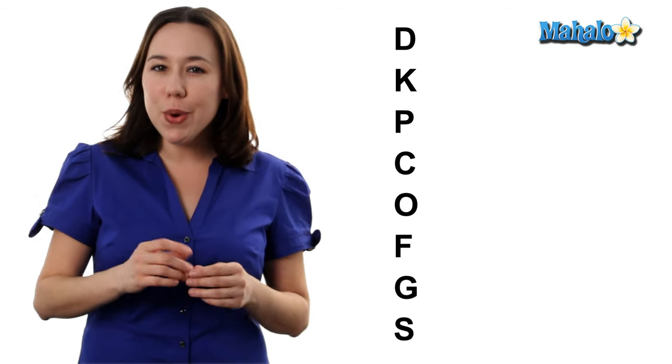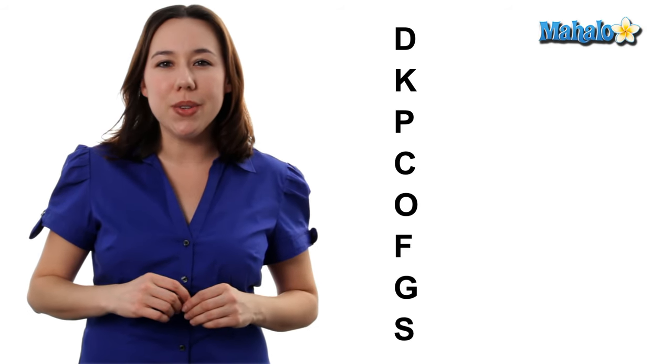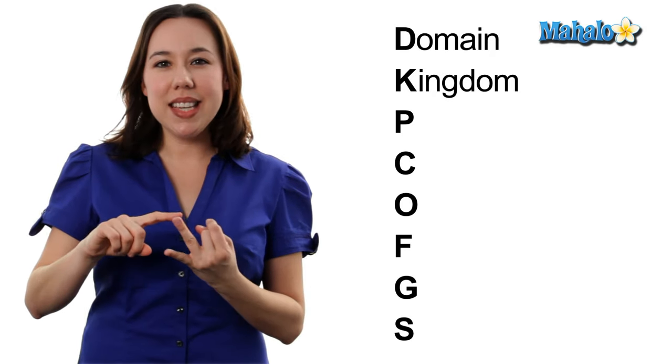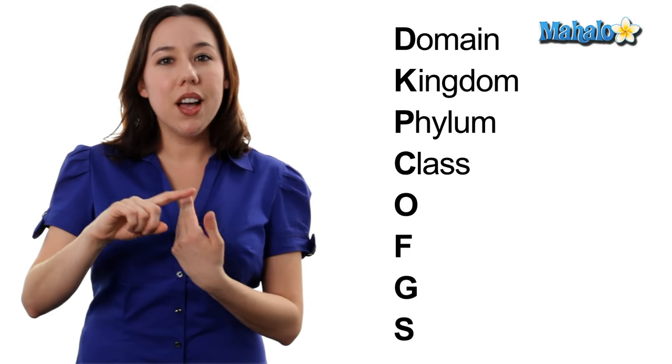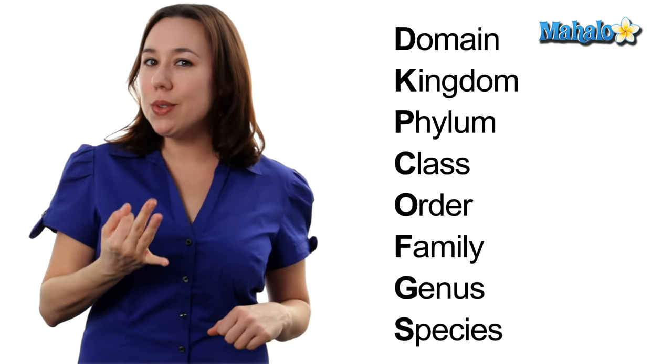A fun little way to remember all these different levels of classification and the order they go in goes a little something like this: Dead kings play cards on fat green stools.